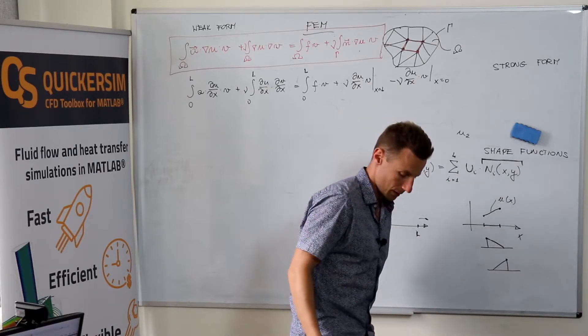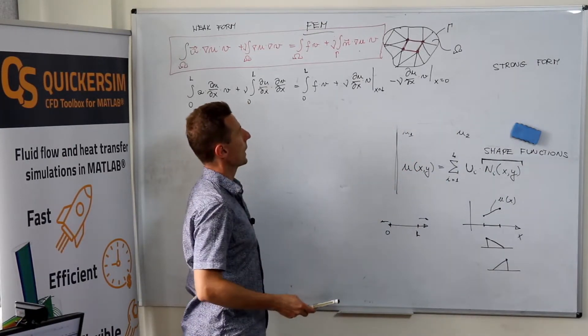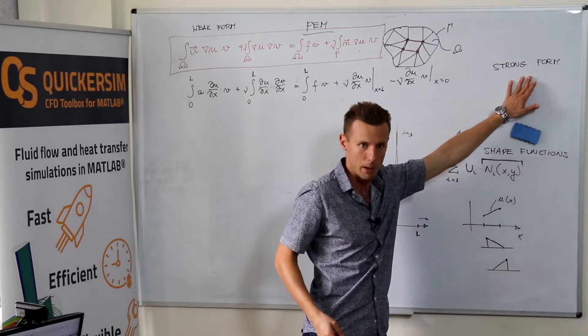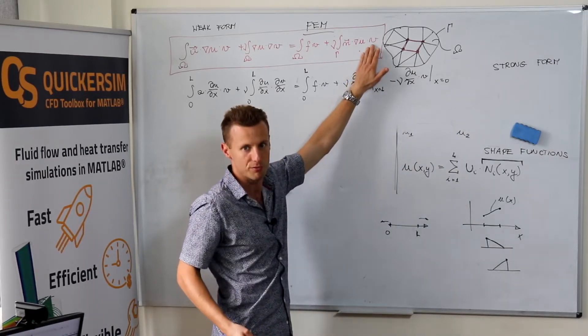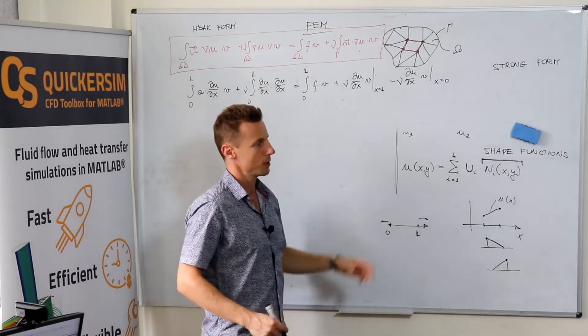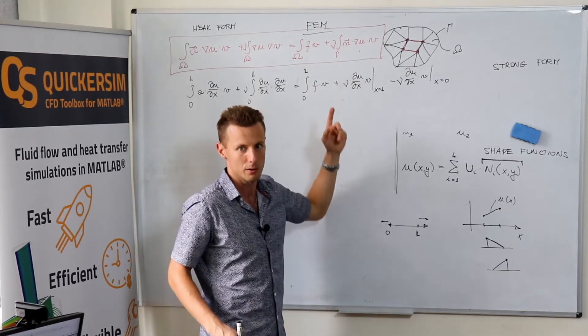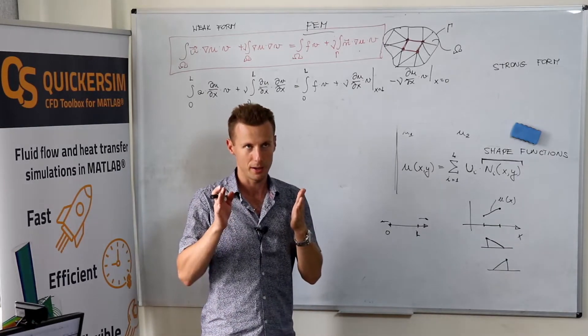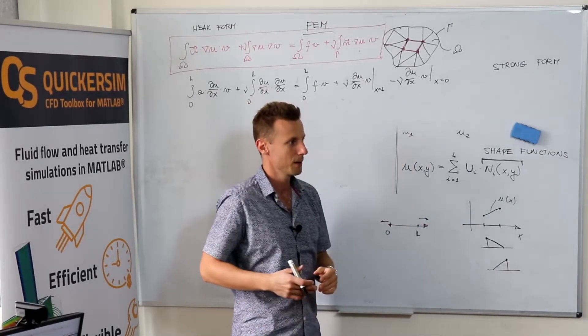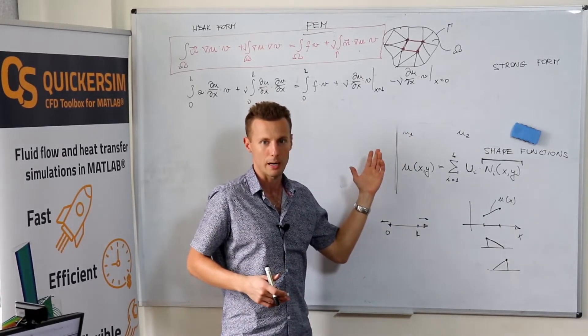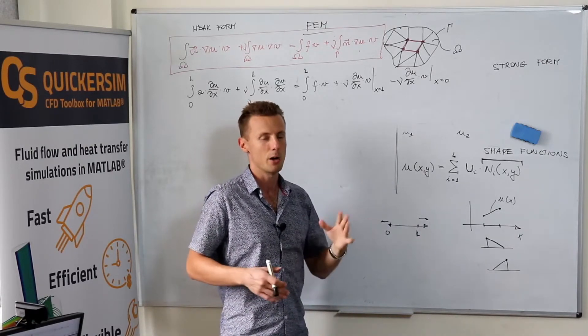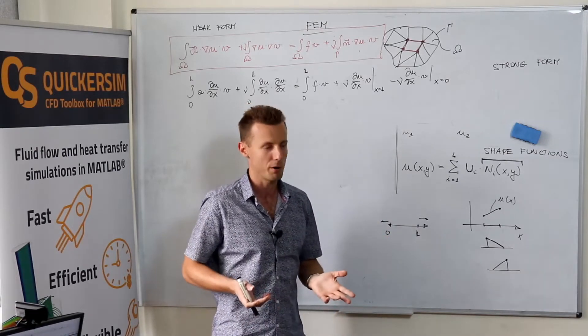But the other one is because we have multiplied the strong form. We have multiplied by some function v and integrated over the whole domain. Which means we do not really require that the equation is fulfilled exactly at every location in the domain.